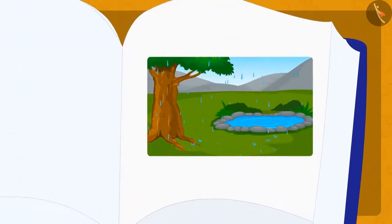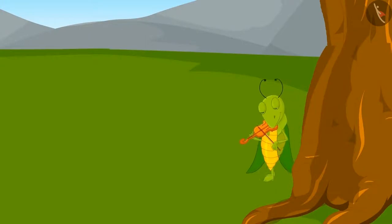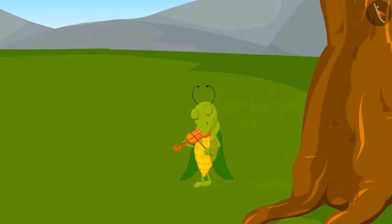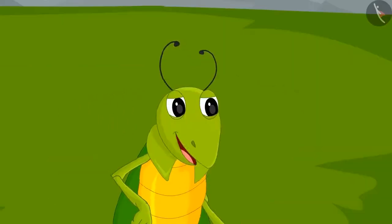Children, do you like the rainy season? Come, let us listen to a story of the rainy season. In this lesson we'll see some interesting examples of addition of three-digit numbers. One day Tinku the grasshopper was walking around playing the violin.